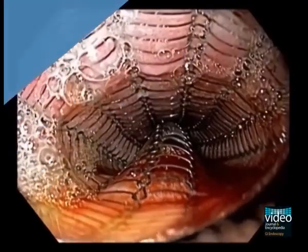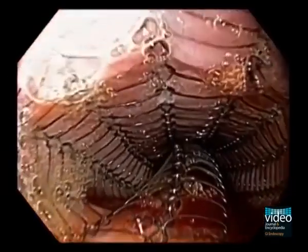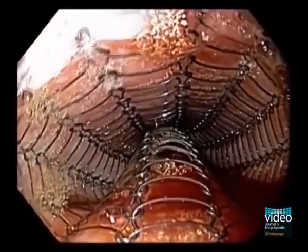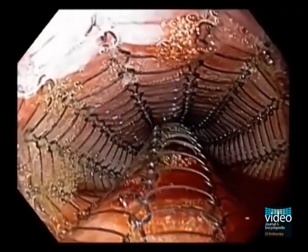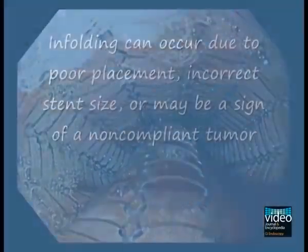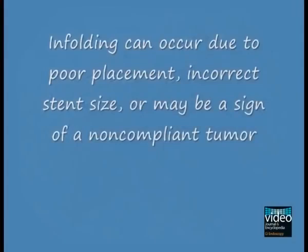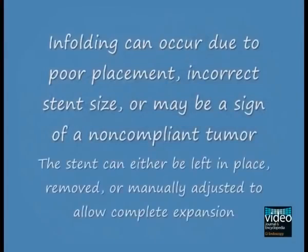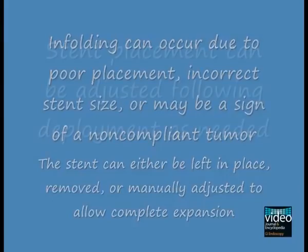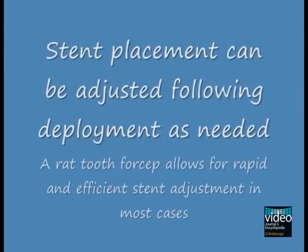Complications can occur. In this case you see an enfolded stent immediately after deployment. Enfolding can occur due to poor placement, incorrect stent size, or it may be a sign of a non-compliant tumour. The stent can be left in place, removed, or manually adjusted to allow complete expansion.